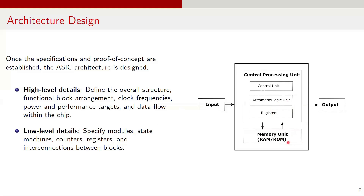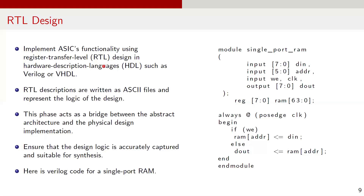Here is a high-level architecture of a microprocessor. Once the architecture is defined, designers implement the ESIC functionality using register transfer-level design, typically in hardware description languages such as Verilog or VHDL. These RTL descriptions are written as ASCII files and represent the logic of the design. This stage bridges the gap between abstract architectural design and the physical design implementation, ensuring that the design logic is accurately captured and suitable for synthesis. The RTL defines how data moves between the registers and how operations are performed on that data. Not all blocks in RTL are written from scratch — many blocks, especially common functionalities such as logic gates, flip-flops, or memory elements, can be reused from previous designs. This reuse reduces design time and improves reliability as these blocks have already been verified in prior implementations. Here is the Verilog code for a simple single-port RAM block commonly used in different architectures.